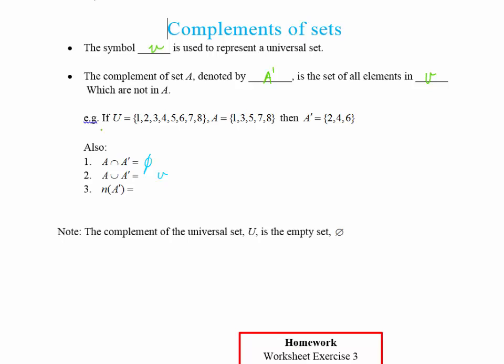And the last thing I need to think about are the number, or what I've put here, what are the number, what is the number in my subset A dash, or the complement of A. So if I look at that, to find it, it has to be the number in my universal set minus the number in the subset. And in this case, if I was looking at just this example, the number in A dash would be 3.